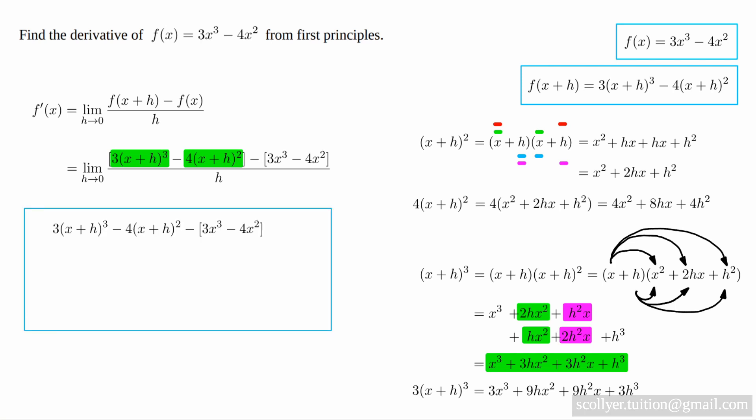Now the numerator expands as follows, where we have replaced 3x plus h cubed with its expansion, and similarly for minus 4x plus h squared, and where we have expanded the final two terms as minus 3x cubed plus 4x squared.